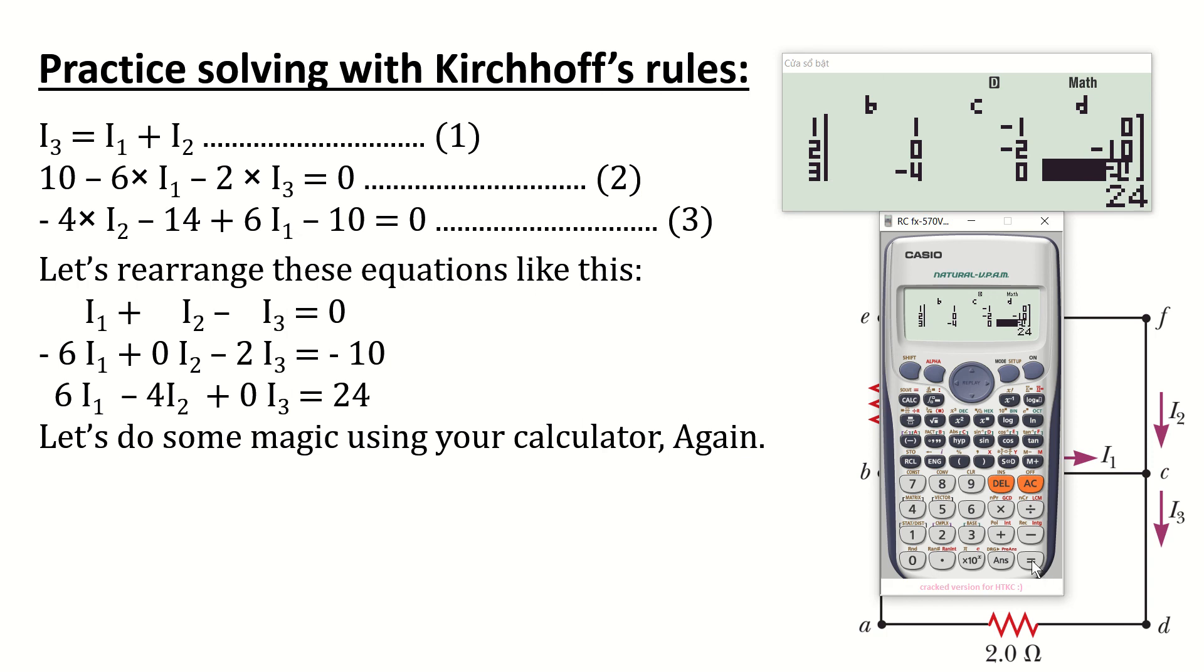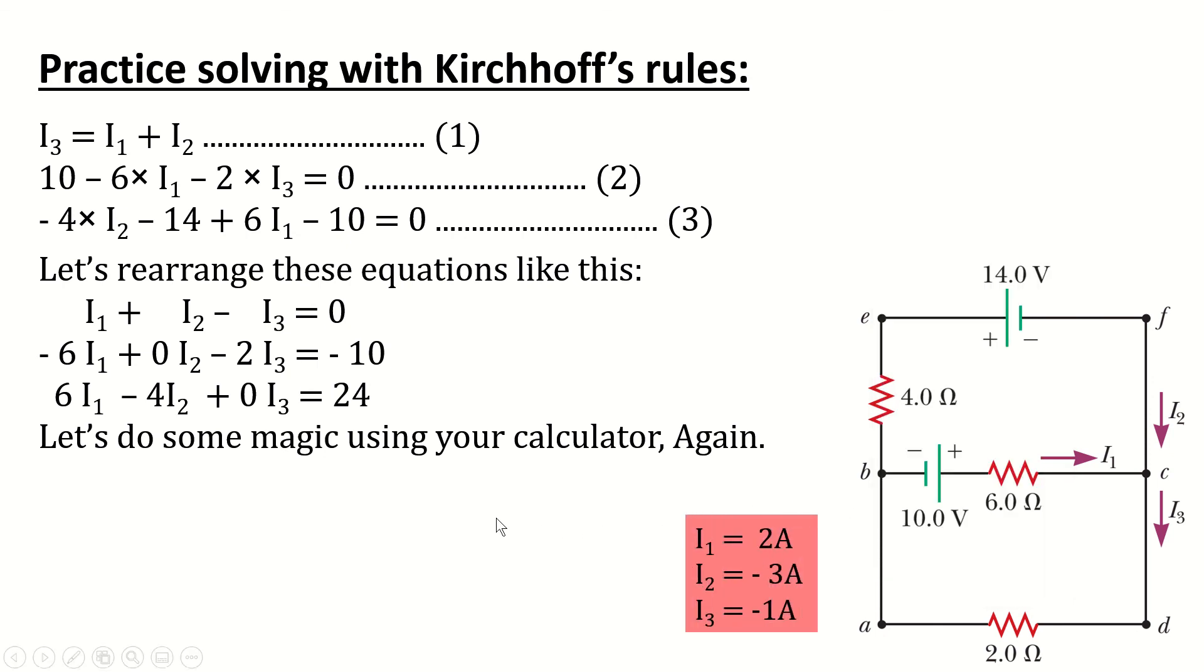Again, you need to press equal to find out the values. X equals 2, X here represents I1. Y equals negative 3, Z equals negative 1, and this is the same as we found from our calculations. Your calculator can save your time.